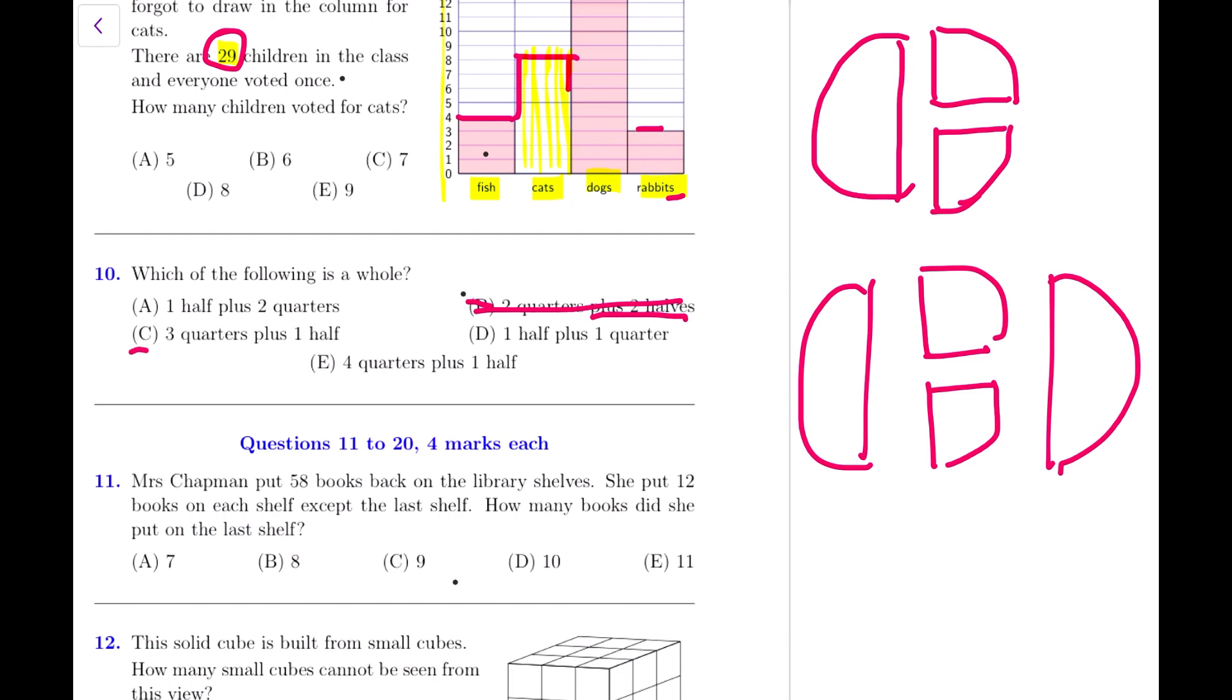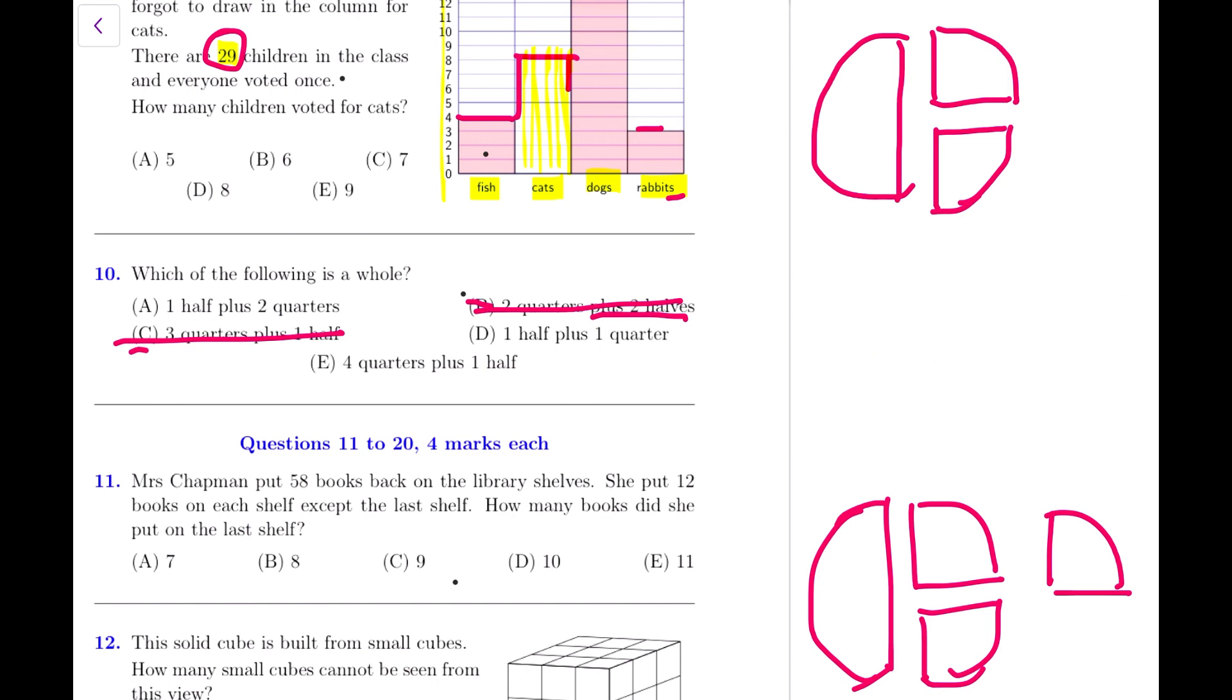Let's have a look at C. 3 quarters plus 1 half. If we have 1 half already, 3 quarters will be too many. We have 2 quarters and then 1 quarter will be left behind. We will not need that 1 quarter more, so C cannot be the answer. D: 1 half and 1 quarter. So if we have a half and just 1 quarter, that's not enough, that's less than a whole, so D cannot be the answer. Of course, we found our answer in the first go, but we were just checking. A is our first. A option is correct. 1 half and 2 quarters will make a whole.